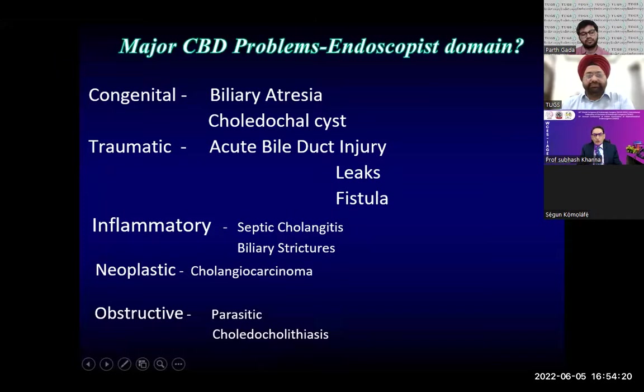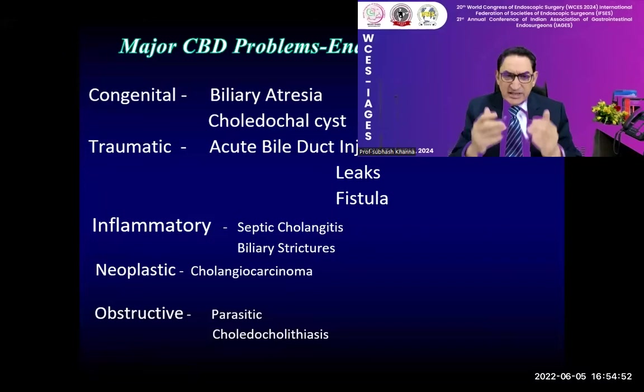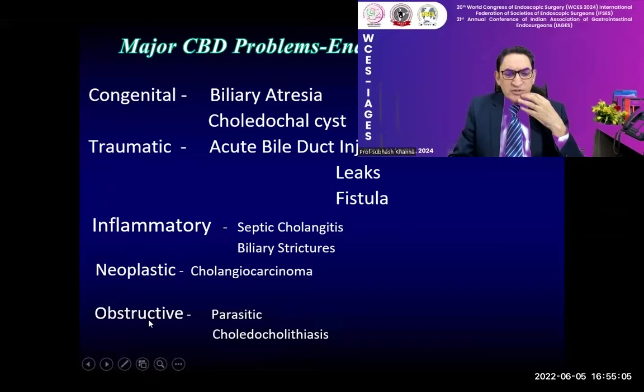When looking at common bile duct problems — we always think of the CBD as a conduit between the liver and the intestine, but it is surrounded by pancreas and so many organs around it. The moment any other organ is affected, CBD is affected — whether it's an ampullary mass or anything of that sort. CBD may be affected by congenital, traumatic, inflammatory, neoplastic, and obstructive lesions — all of these cause different types of jaundice, cholangitis, and problems, and most of these are amenable to endoscopy.